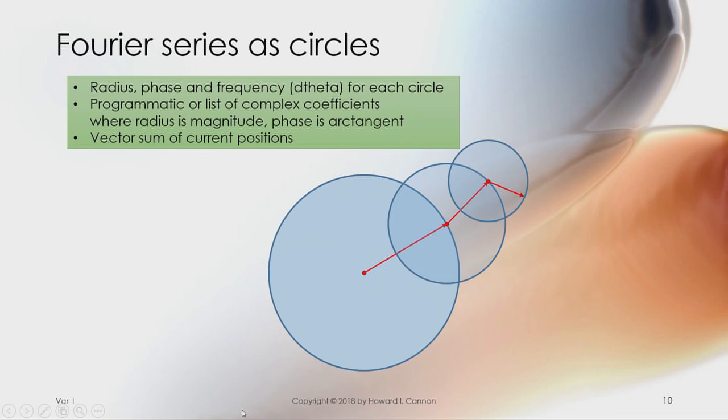So now let's jump on a Fourier series for a second. So how can we use all this triangle mechanism to maybe demonstrate Fourier series?